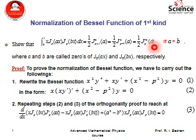Of course here if a equals b. As we said before, a and b are chosen to be the zeros of Bessel function J_P of ax and J_P of bx respectively.